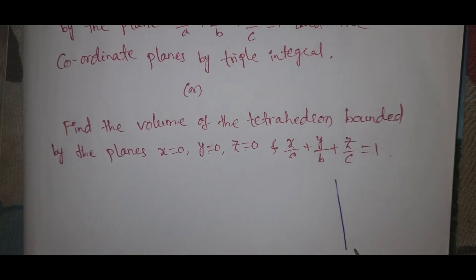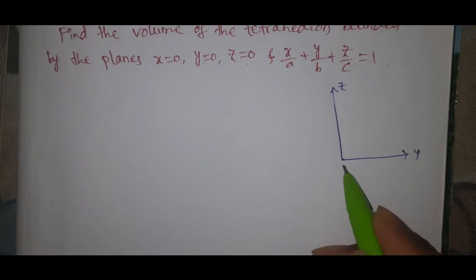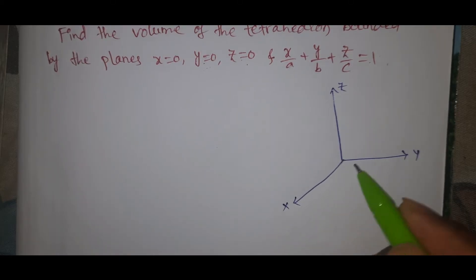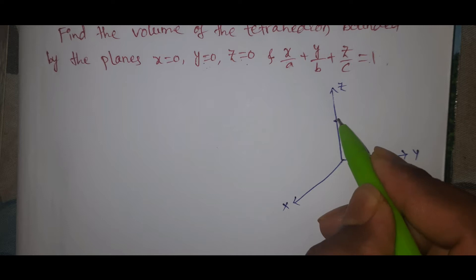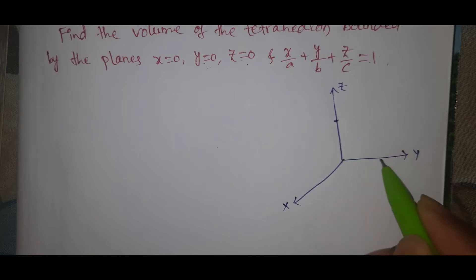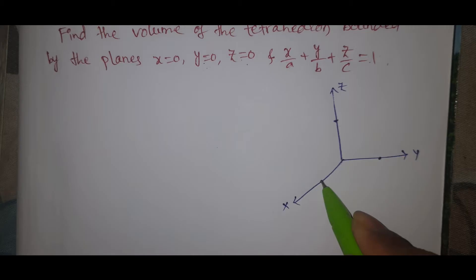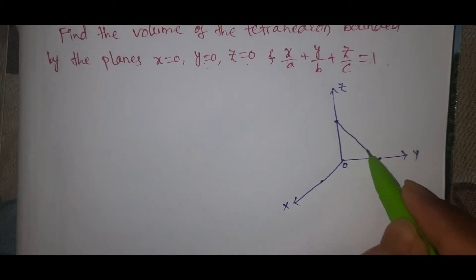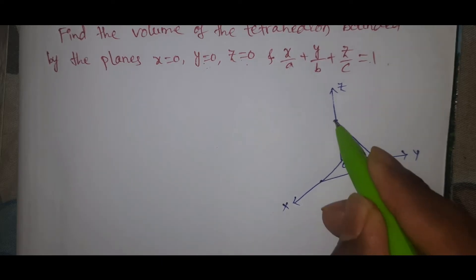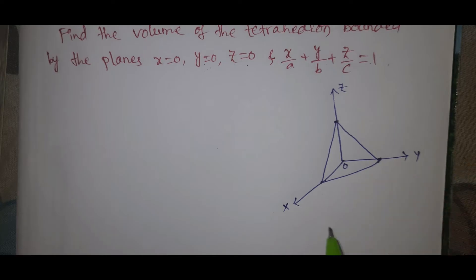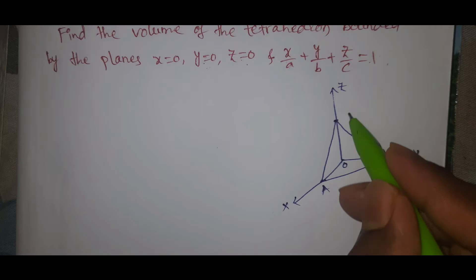We identify the axes: z-axis, y-axis, and x-axis. The intercept on the z-axis is the point c, on the y-axis is the point b, and on the x-axis is the point a. This is the origin. The tetrahedron has vertices O, A, B, C.